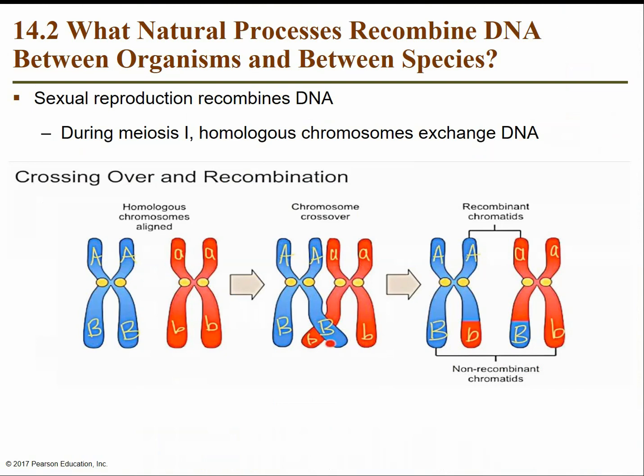Looking at some natural processes that recombine DNA between organisms or species. Sexual reproduction is a primary way to increase genetic diversity by recombining and shuffling genes. Another mechanism is crossing over in meiosis, during prophase one, where chromosomes lined up in close proximity are able to swap pieces of their chromosomes.